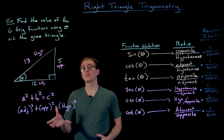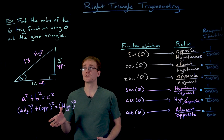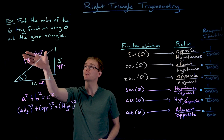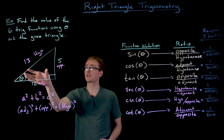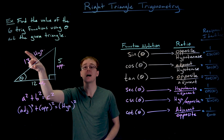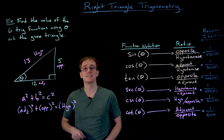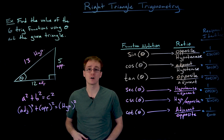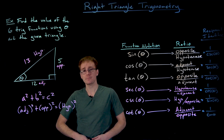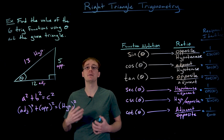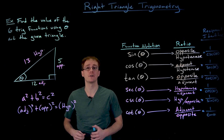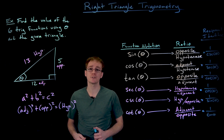Hey everyone. We saw in our earlier video example that in order to find the values of our six trig functions using the given information, we had to find that missing side length in our triangle using the Pythagorean theorem. I wanted to talk a bit more about the Pythagorean theorem and how important it really is for us.